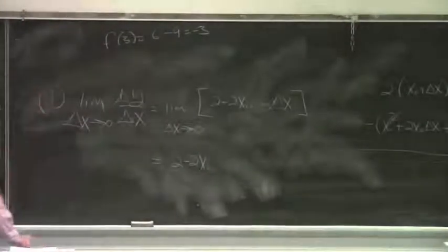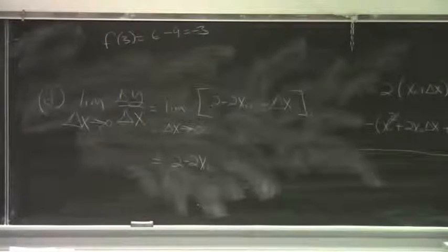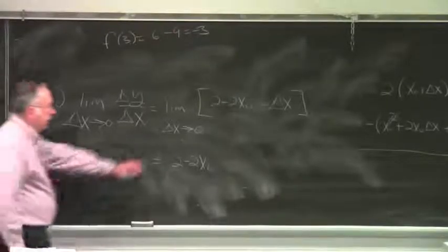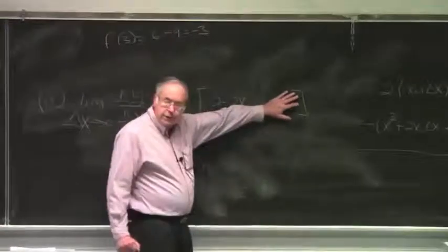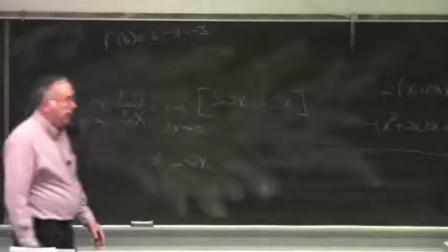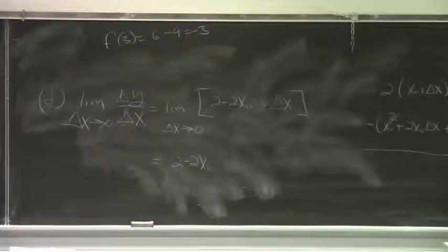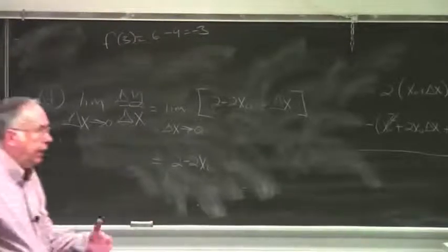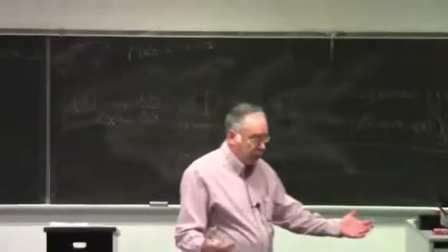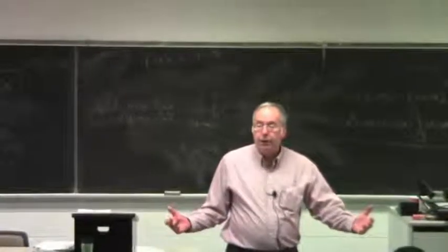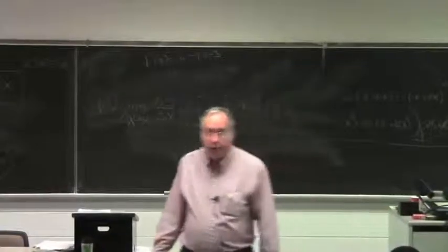That is the limit of the difference quotient as delta x goes to zero. The delta x just drops out in the limit. This we call what? What's another name for this limit of the difference quotient as delta x goes to zero? The derivative. It's just the definition of the derivative.